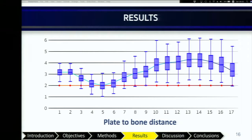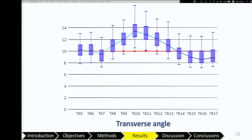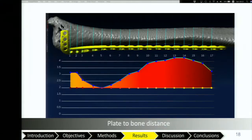We found that all screw holes except the fifth were incompatible. Transverse angles were acceptable only at screw holes 7 and 14 to 17. An incompatibility of more than 2 mm can result in malalignment and weaken the entire construct. We found potential plate incompatibility with plate lengths greater than 6 screw holes.